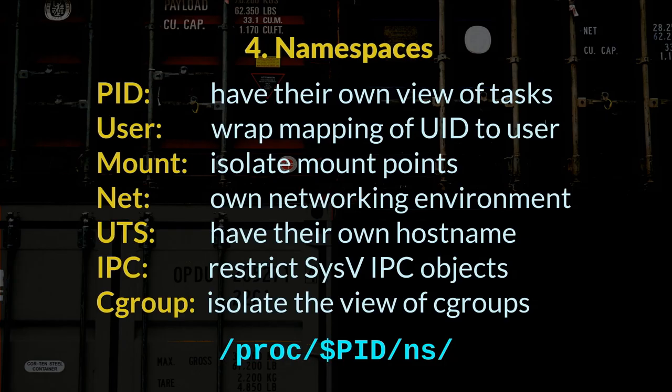Namespaces give processes a different view of a host resource. They're important in container land — think of them like a private karaoke room: you're still inside the karaoke parlor, but you can only hear yourself or your friends in the room with you, but the employees can definitely hear you. The PID namespace makes PID start at 1 inside a container. The user namespace maps UIDs so that root inside the container is actually a garbage UID on the host. The mount namespace defines what the root of a container's file system is.